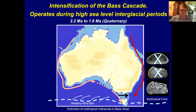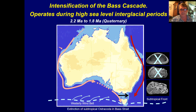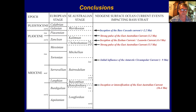By the Quaternary, there was another climate shift — a northward shift of the Westerly Wind Belt, which created a very cold winter current during high sea level periods known as the Bass Cascade. Many of the warm water taxa that had previously lived in Bass Strait could no longer survive because the winter waters were simply too cold. This led to the extinction of many warm water taxa within Bass Strait with the advent of the Bass Cascade at the start of the Quaternary, related to that northward shift of the Westerly Wind Belt.